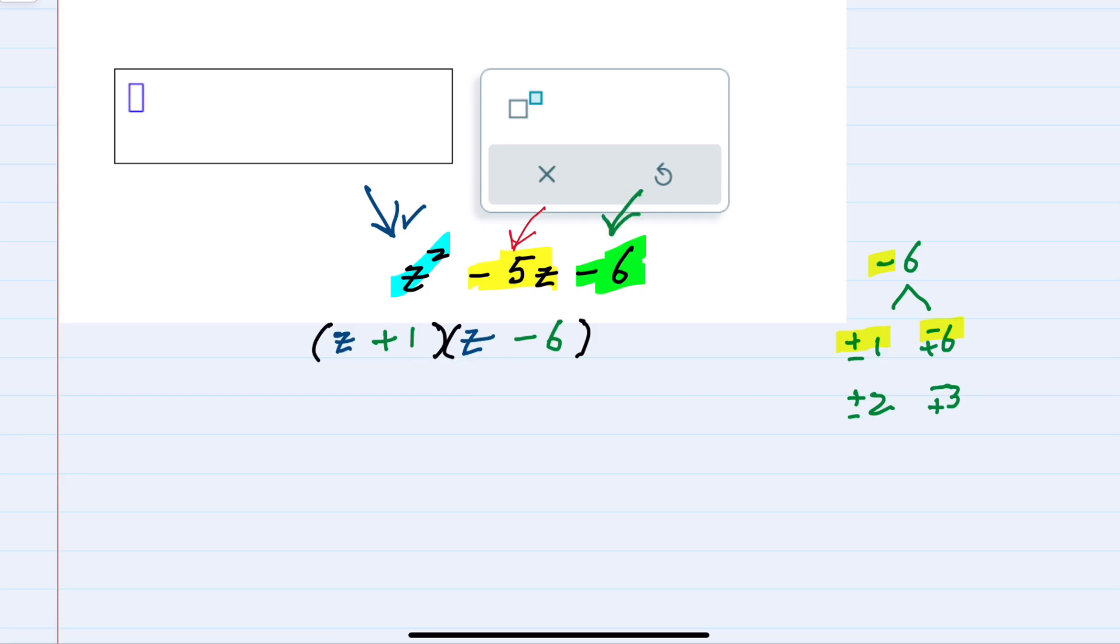But to check that middle term I need to look at the inside multiplication which gives us plus 1z, and the outside multiplication which gives us minus 6z. When these two are added, plus 1z minus 6z, I do get this minus 5z. So I've confirmed that this multiplication does work.